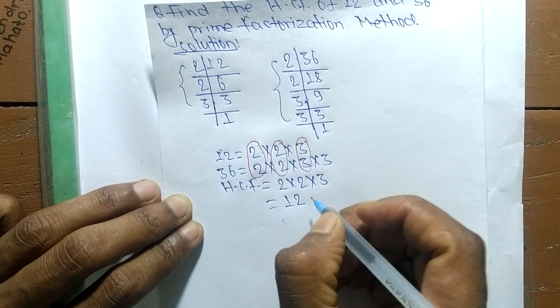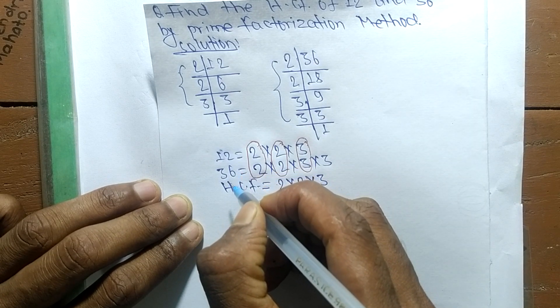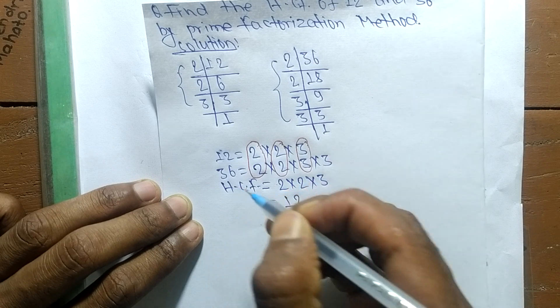So 12 is the highest common factor of 12 and 36. That's all for today, and thanks for watching.